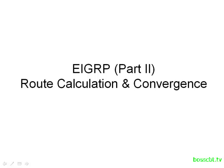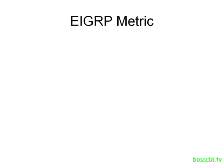Hello and welcome to this tutorial on EIGRP. This is part two and we're going to talk about how routes are calculated and then how a network running EIGRP behaves when a failure happens — so how does it converge? We have to start with the EIGRP metric, and this will help us make sense of everything.